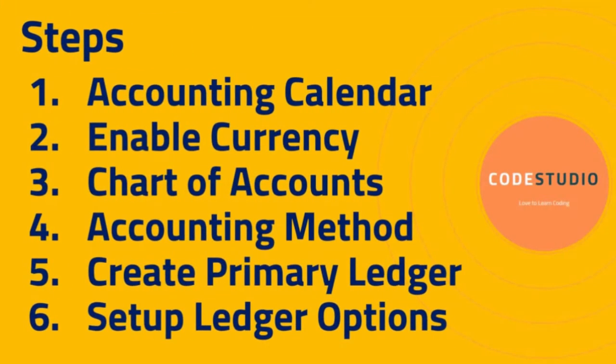Third step: create chart of accounts. The chart of accounts is a list of all financial accounts included in the financial statement of any company. It provides a way to categorize all financial transactions during a specific accounting period. The main account types include revenue, expenses, assets, liability and equity. In Cloud ERP, Oracle allows a maximum of 30 segments and a minimum of 2 segments — company and account. Generally, clients will have minimum 5 to 9 segments with some future segments.